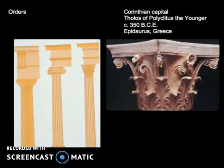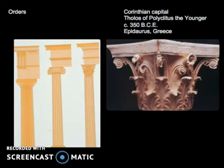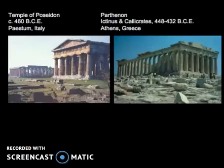Doric: a simple saucer capital or top finishes off a base-free fluted or channeled column. Second, Ionic: the scrolls of the column balance the base. Third, Corinthian: the capital consists of outward-turning acanthus leaves.